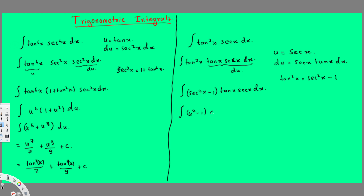This is easy to integrate. Integrating (u² - 1) du gives u³/3 - u + C. Now substituting sec x back for u, the final answer is sec³x/3 - sec x + C. I hope you guys liked this video, see you next time.